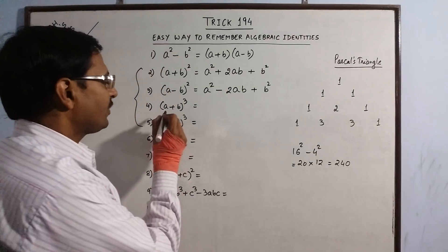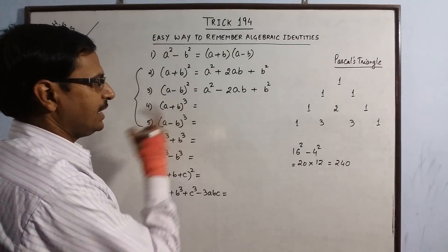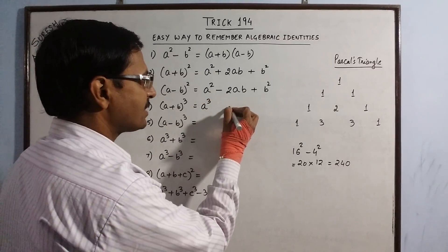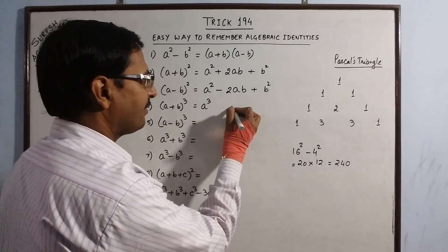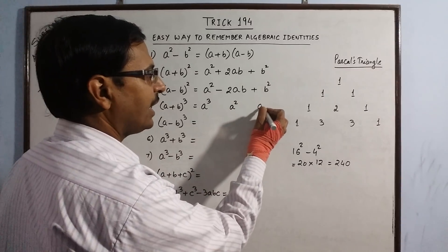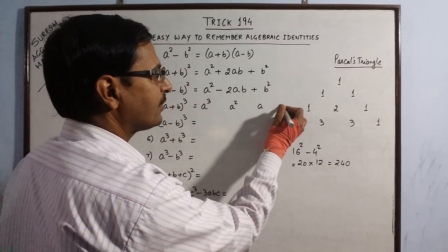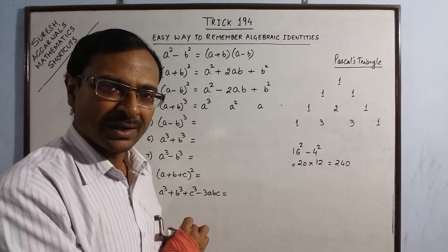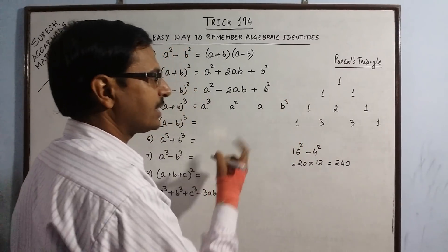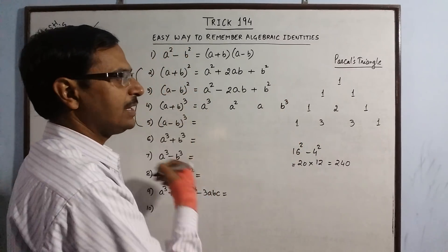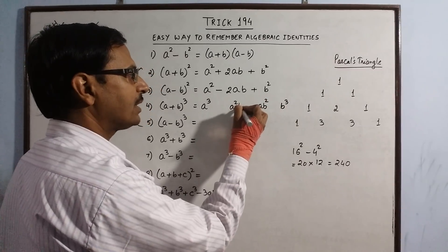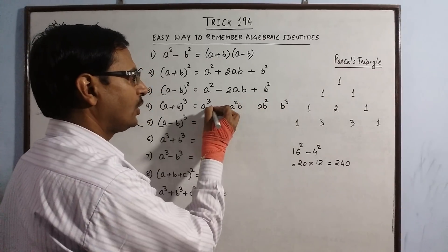For A plus B whole cube, the power is 3. We start with A raised to power 3, then A square, then A, then A will not exist. For B, we start with B cube, then B square, then B, then no B.